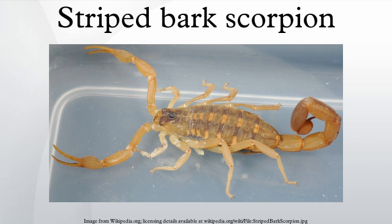C. vittatus has a very dynamic diet which includes insects, smaller arachnids, and juveniles of the same species. It is preyed on by birds, reptiles, some mammals, and larger arachnids.